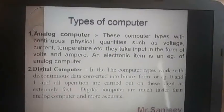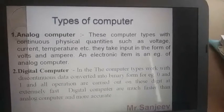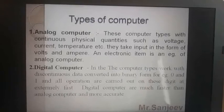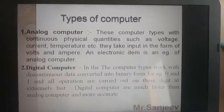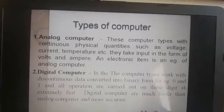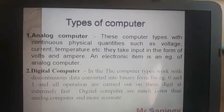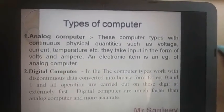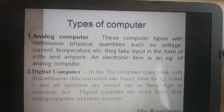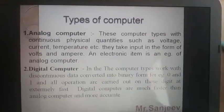ہمارے گھروں کے اندر electricity board سے جو بھی electricity آ رہی ہے، اس electricity کے flow کو analog computer control کر رہا ہے۔ ہمارے گھروں کے اندر meter کے پاس ایک stabilizer کا use ہم کرتے ہیں — وہ stabilizer electricity board سے جو electricity ہمارے گھروں میں آتی ہے، اس up-down کے flow کو analog computer control کر رہا ہے۔